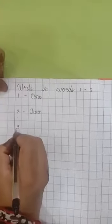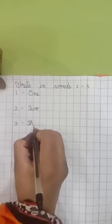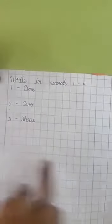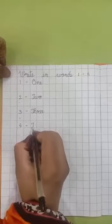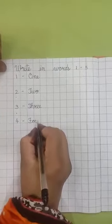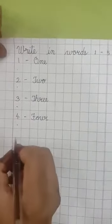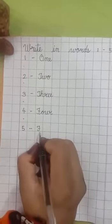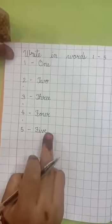Put one dot. Number 3, small dash. Capital T H R E E. Spelling of 3. Put one dot. Write here: 4 number, small dash. Capital F O U R 4. Put one dot. Then 5 number, small dash. Capital F I V E. F I V E 5. Okay?